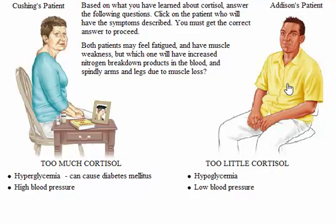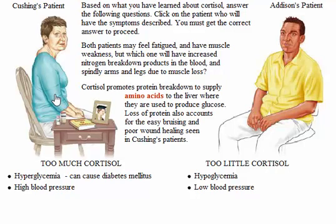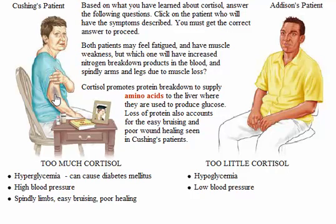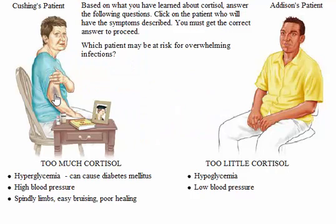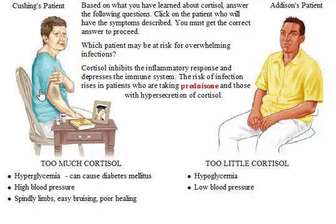Both patients may feel fatigued and have muscle weakness, but which one will have increased nitrogen breakdown products in the blood and spindly arms and legs due to muscle loss? Cortisol promotes protein breakdown to supply amino acids to the liver where they are used to produce glucose. Loss of protein also accounts for the easy bruising and poor wound healing seen in Cushing's patients. Cortisol inhibits the inflammatory response and depresses the immune system, and the risk of infection rises in patients with hypersecretion of cortisol or those taking prednisone.